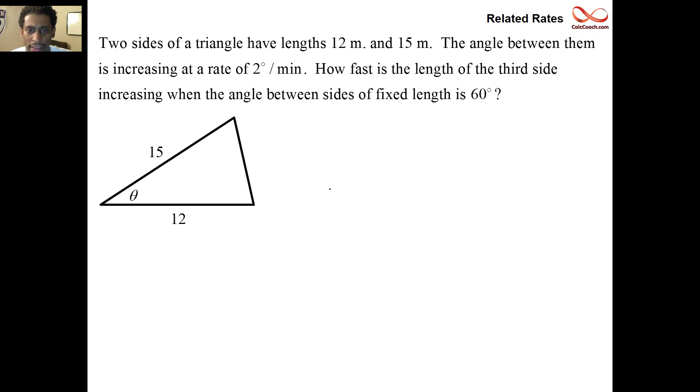So we're going to label that third side as x. As theta increases, x will increase. Our job: find dx/dt. So we need to relate these variables to each other. We have three sides of a triangle, the angle opposite one of the sides. The triangle is not necessarily a right triangle. There's an equation that relates the three sides to the angle that's opposite one of them. That equation is called the law of cosines.